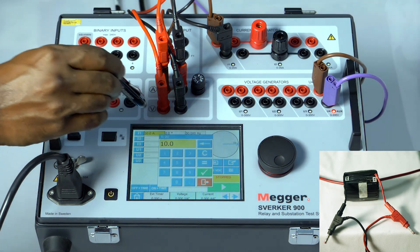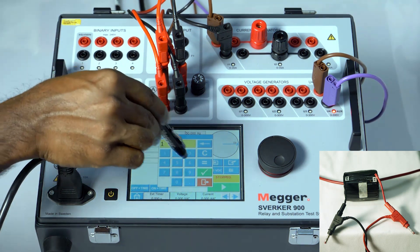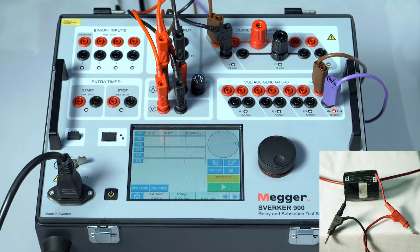Inject 100% of the CT secondary value, such as 1 amp or 5 amps. In this example it's 1 amp.